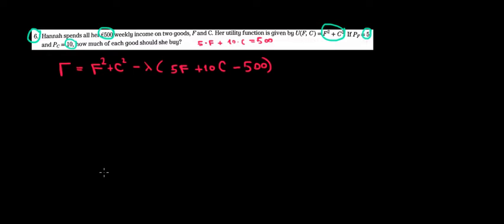Now we take the partial derivatives with respect to food and then with respect to clothing, setting them equal to zero. The partial derivative of the Lagrangian with respect to F: F squared derivative is 2F, minus Lambda times 5. Then 10C and 500 are constants, so their derivatives are zero.